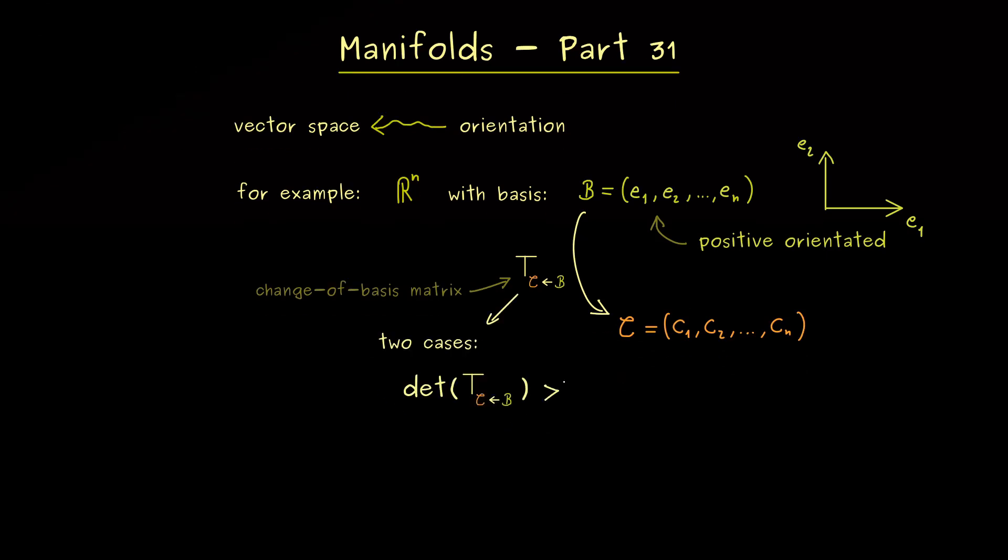We either change the orientation or we don't change it. In particular, in the case that the determinant is greater than zero, the basis C is also positively orientated. However, please note, this is just the name we give to this orientation. The important thing is that the standard basis and this new basis have the same orientation.